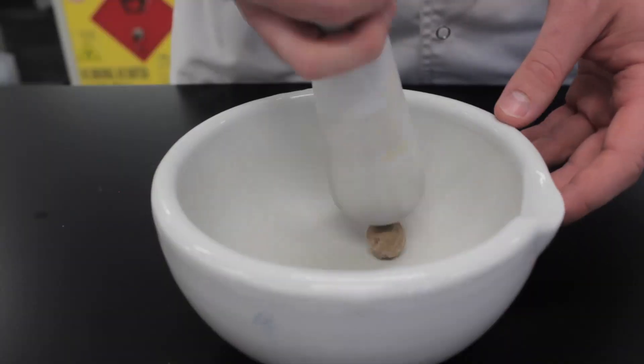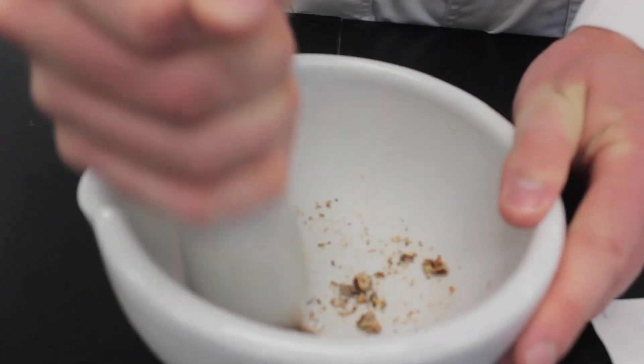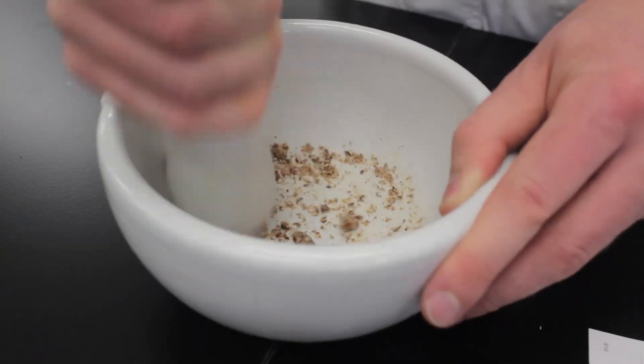Transfer this to a mortar and pestle. Try not to hammer the pestle onto the seeds but instead twist and grind to get fine particles.